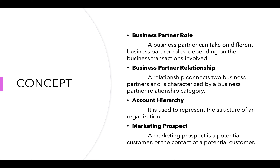A business partner relationship connects two business partners and is characterized by a business partner relationship category. For example, a company might have a contact person, and this relationship is described as contact person. Account hierarchy is used to represent the structure of an organization.